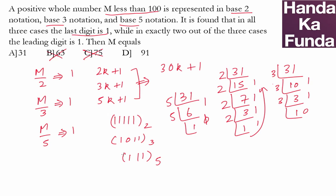What does that mean? In all three cases, I am getting the leading digit as 1. But I want the leading digit to be 1 in exactly 2 out of the three cases. Which means 31 is not the answer that we are looking for. And our answer by elimination is option D. Thank you.